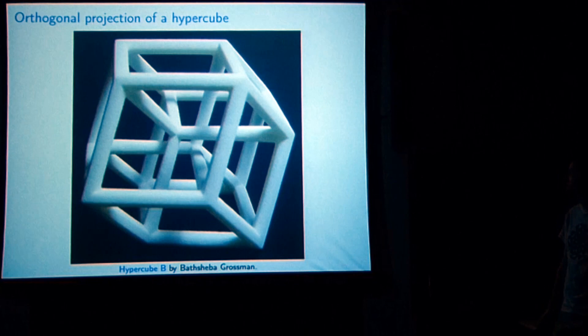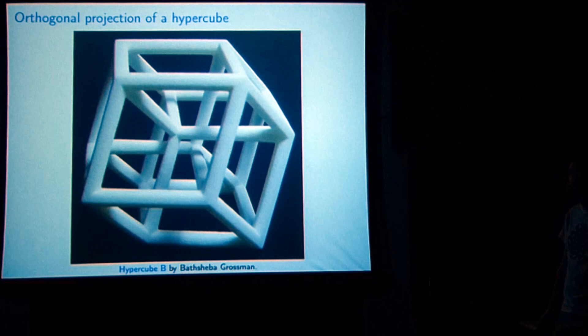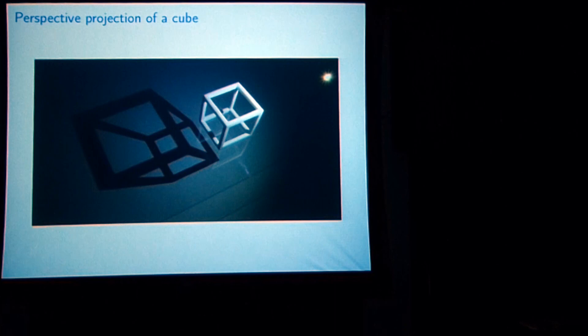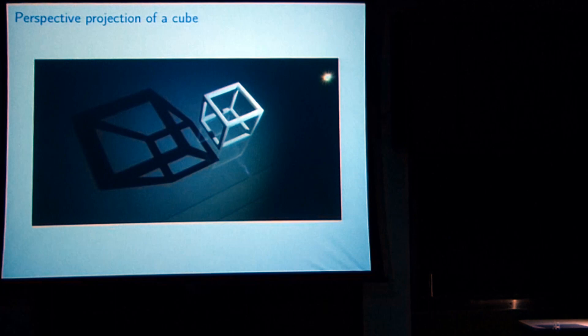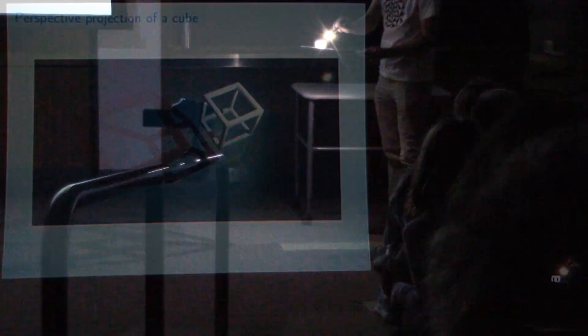What else can we do? Let's do some perspective projection. You bring the light source close enough to the object that you get a perspective view. And why is this a perspective view? If you look at it, it looks like what a photograph of a cube might look like. If you put your eyeball right at where the light source is, what it would see of the cube is the same as what's being projected onto the ground — so you're seeing a perspective picture of the cube.